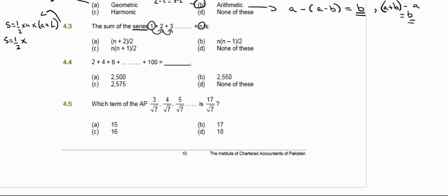Solving with this formula: n is the number of terms, which equals the last value since the first term is 1, the second is 2, and so on — the nth term has value n. So S equals half into n into (1 plus n), which can be rewritten as n(n plus 1) divided by 2. The answer for 4.3 is C.